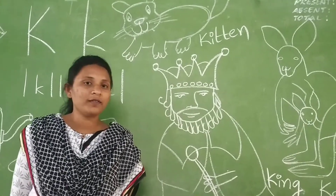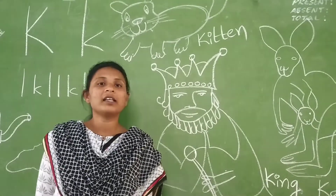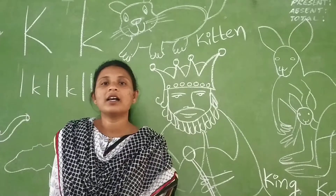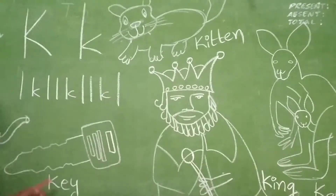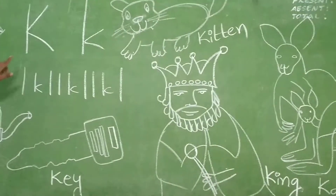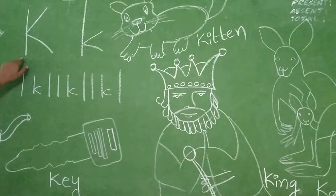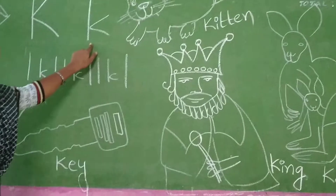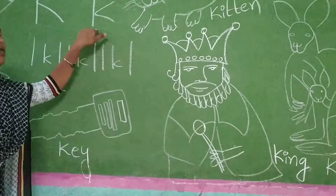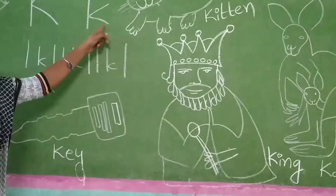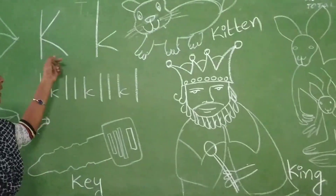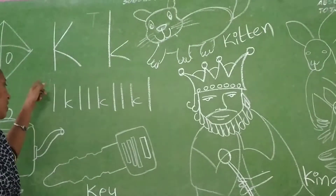The first sound of the letter K is 'K'. Now see here — this is capital K and this is small K. Now see the difference between capital K and small K, children.